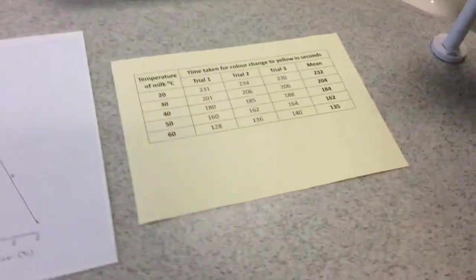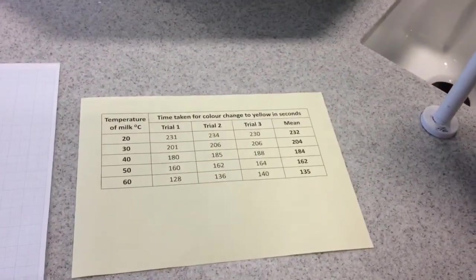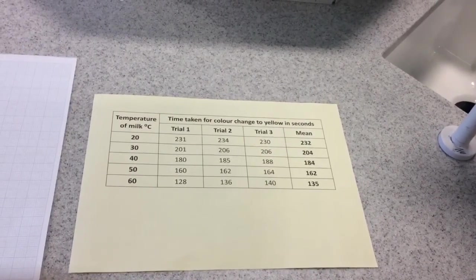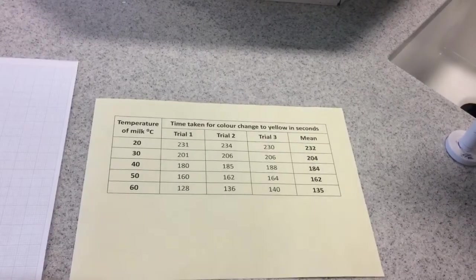I'll go over to my results table. I would try each temperature from a range of 20 degrees to 60 degrees three times. I would calculate a mean. I would do that in seconds, and then I would plot that on a graph.